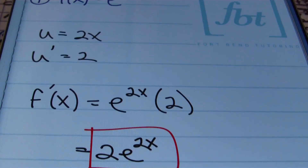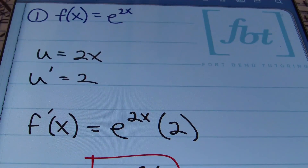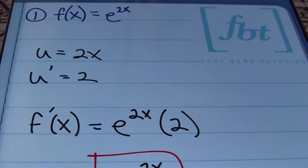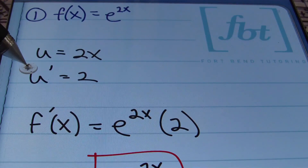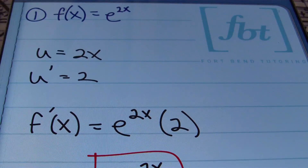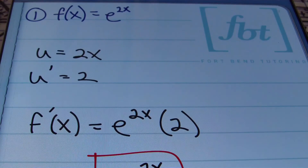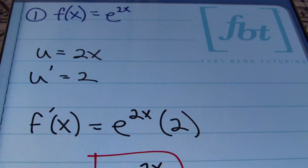To summarize: identify your u — that function of x in the exponent — find the derivative of that exponent, then multiply that derivative times the original natural exponential function. That's e to the u times u prime. Let's move on to problem number two.